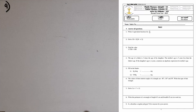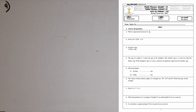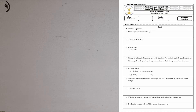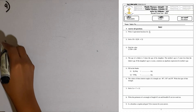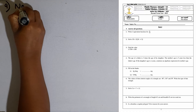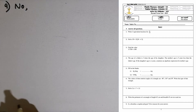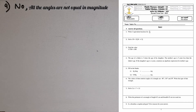Question number 9. Is a rhombus a regular polygon? Give reasons for your answer. In a regular polygon, all sides are equal in length and all angles are equal in magnitude. In a rhombus, though all sides are equal in length, all angles are not equal. So a rhombus is not a regular polygon. The reason is all angles are not equal in magnitude.